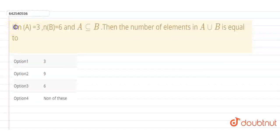So our question is, if n(A) equals to 3, n(B) equals to 6, and A is subset of B, then the number of elements in A union B, it equals 2.